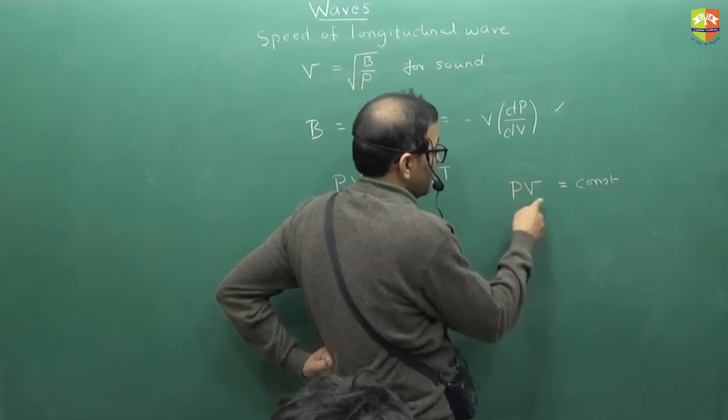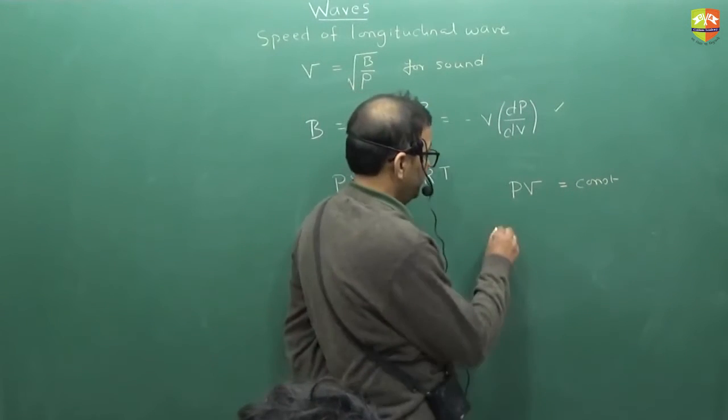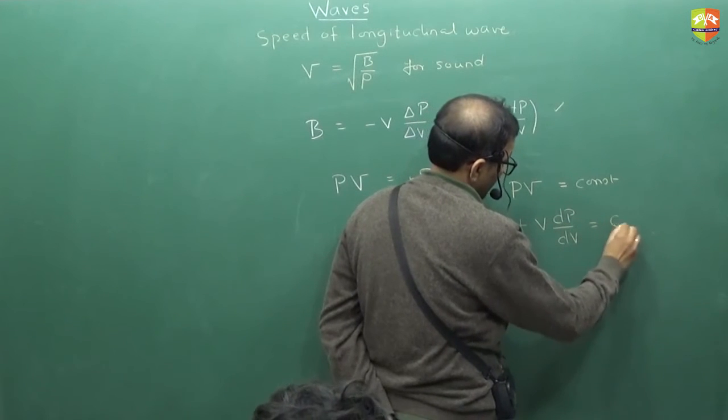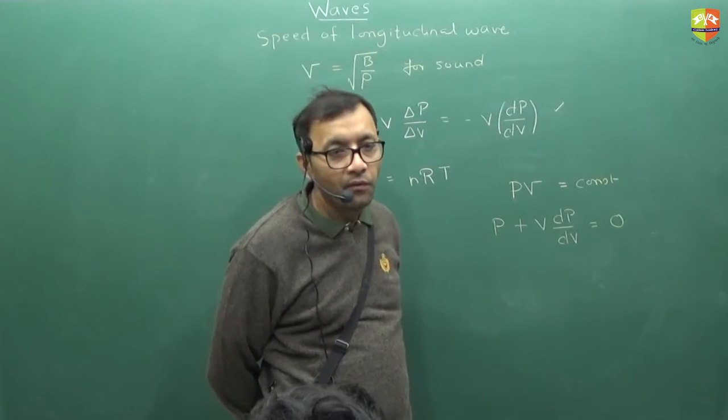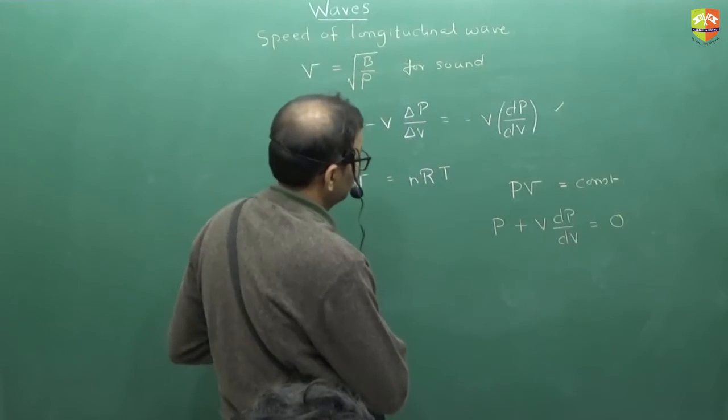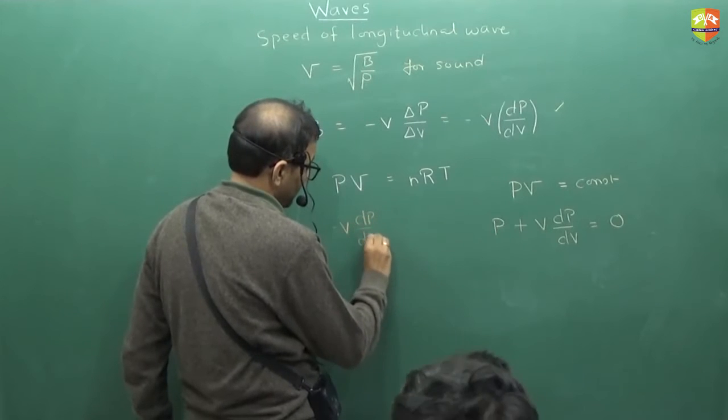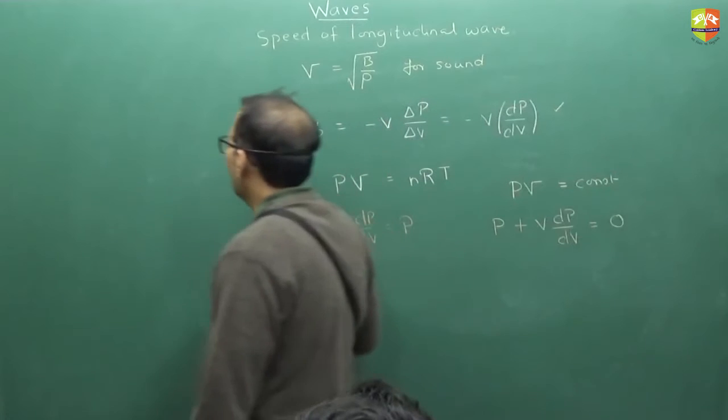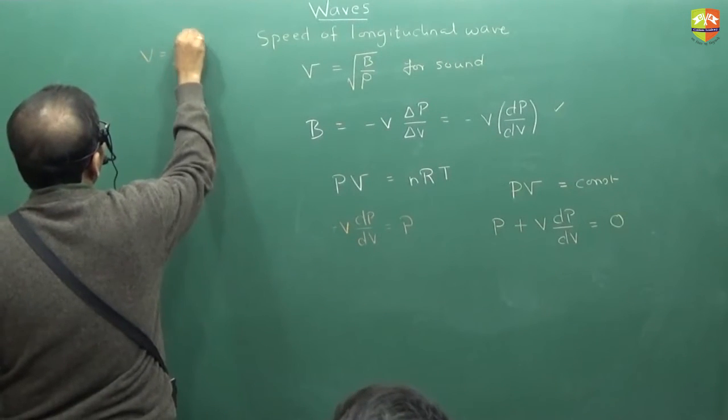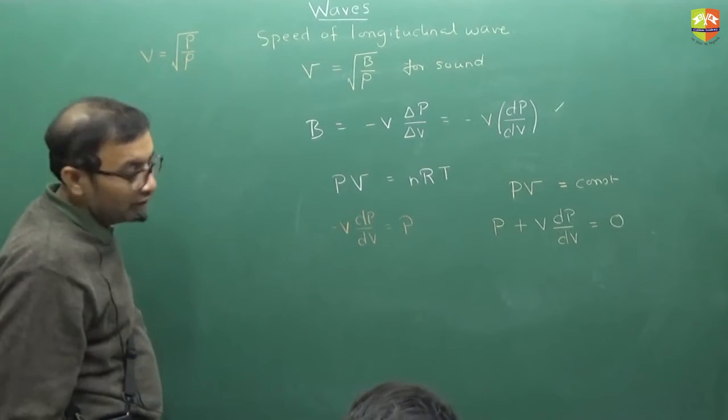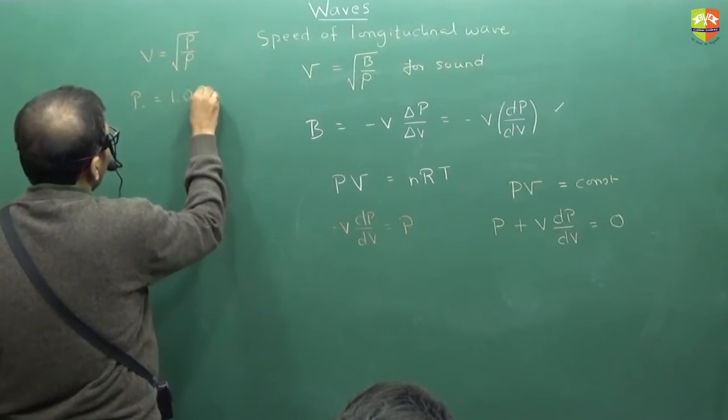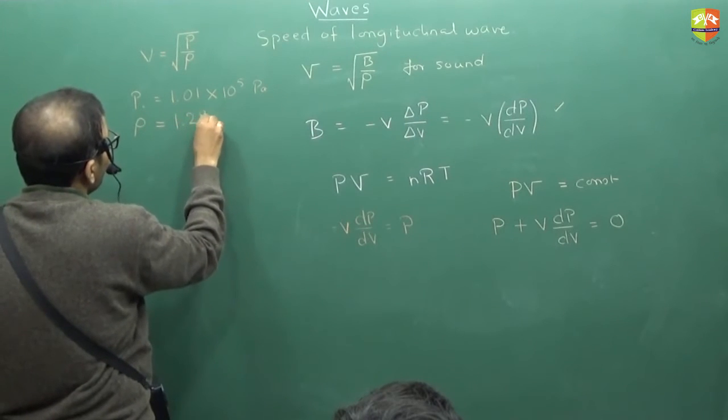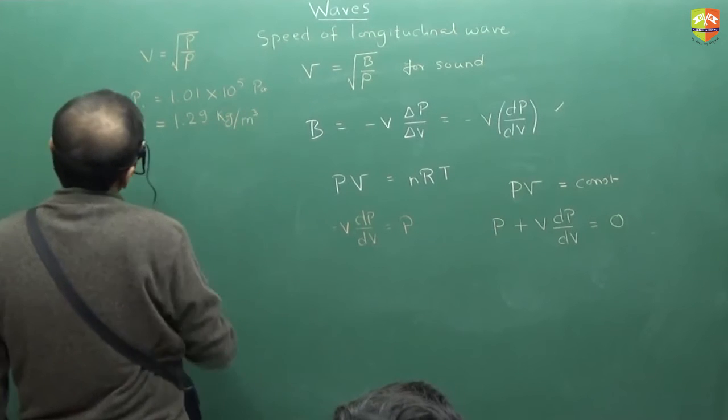So assuming that it is an isothermal process, PV is constant, can you find out the value of bulk modulus? This one. Try finding it out. Just differentiate it. This expression differentiate with respect to V. What do you get? So what will be the bulk modulus? Minus of V, dP by dV is P only. P is what? Atmospheric pressure. So the velocity of the sound should be equal to root over P by rho. P is the atmospheric pressure. The value of atmospheric pressure you know is 1.01 times 10 to the power 5 Pascal. Density of the gas is roughly 1.29 kg per meter cube.